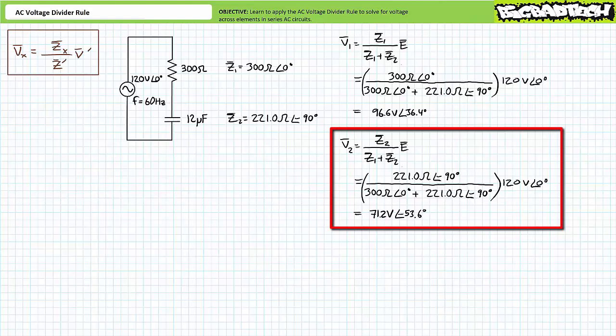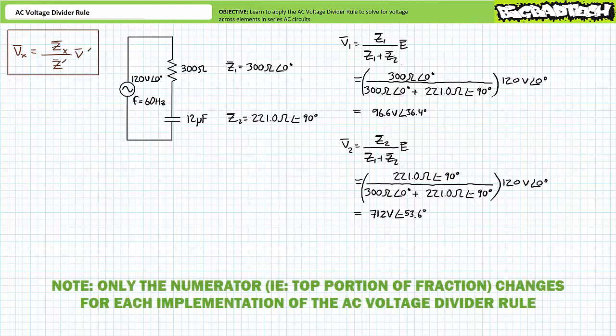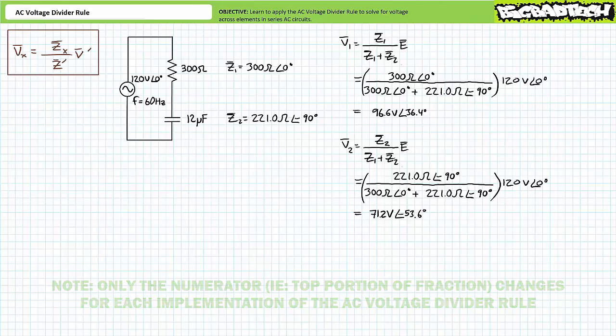Similarly, the AC voltage divider rule solving for V2 suggests that V2 equals Z2 divided by (Z1 plus Z2) times source voltage E. Substituting in our given values yields V2 to be 71.2 volts at an angle of negative 53.6 degrees. There you have it — two quick applications of the AC voltage divider rule yielded our desired results without any delay, toil, or tears.